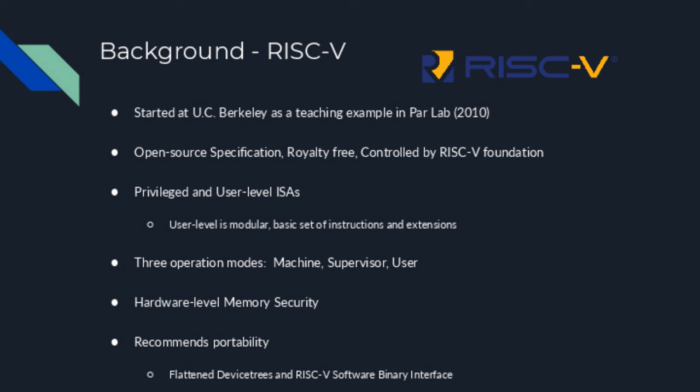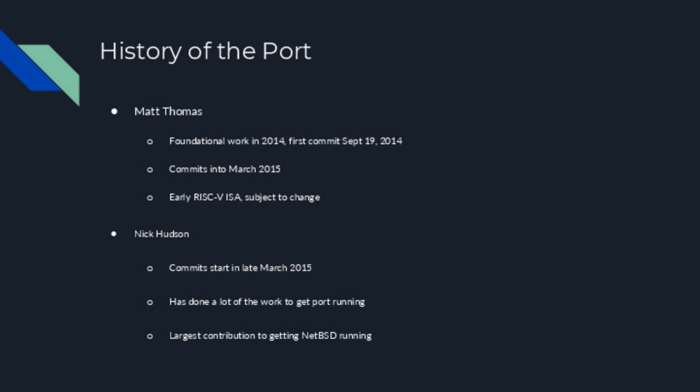Looking at the history of the NetBSD RISC-V port: it started back in 2014. I went back and looked at the commits — the first commit was actually September 19, 2014, done by Matt Thomas. He had several commits through March 2015. This was on the early RISC-V ISA which was still subject to change, and it really did change. The next notable contributor was Nick Hudson, who started committing in late March 2015.